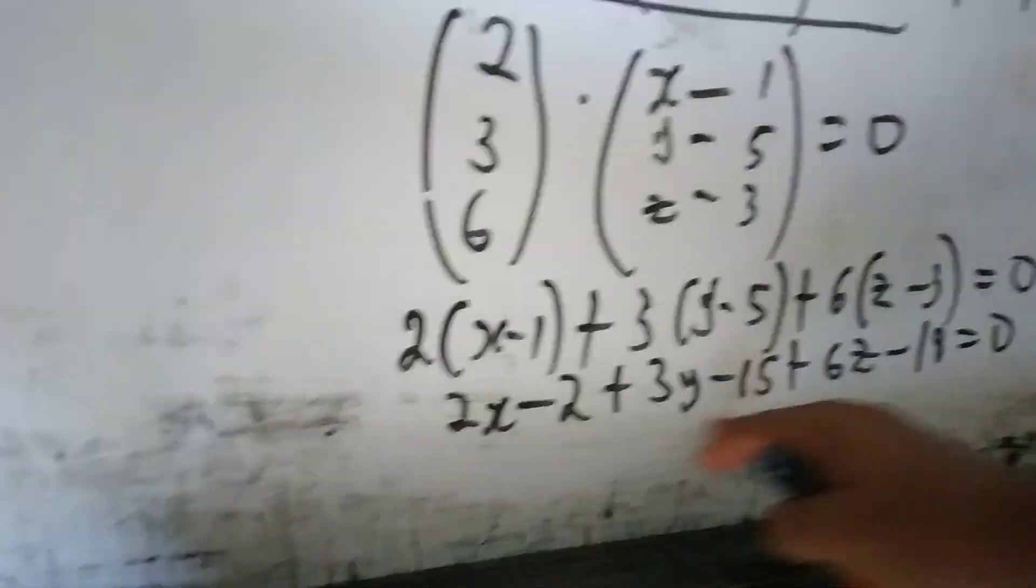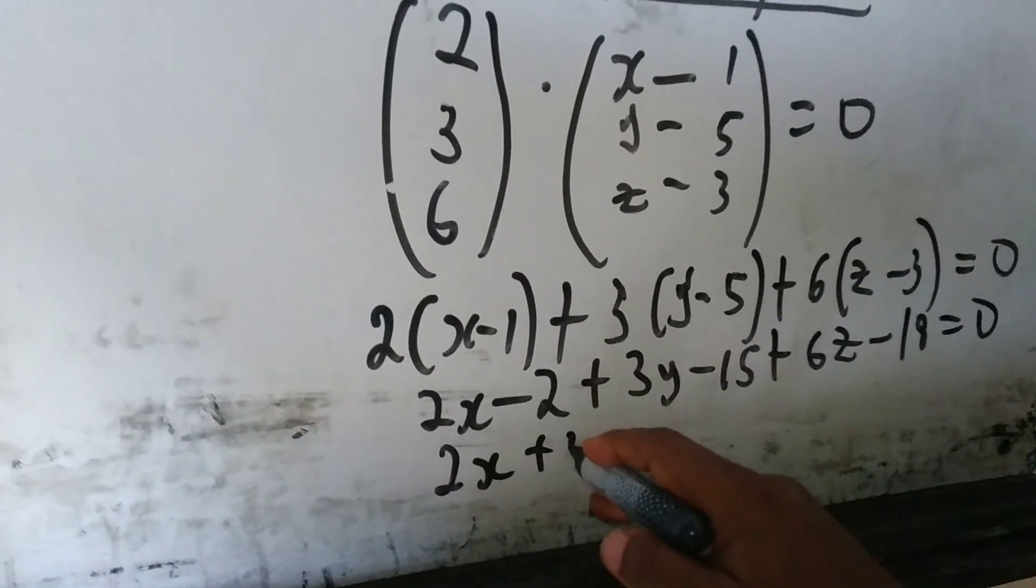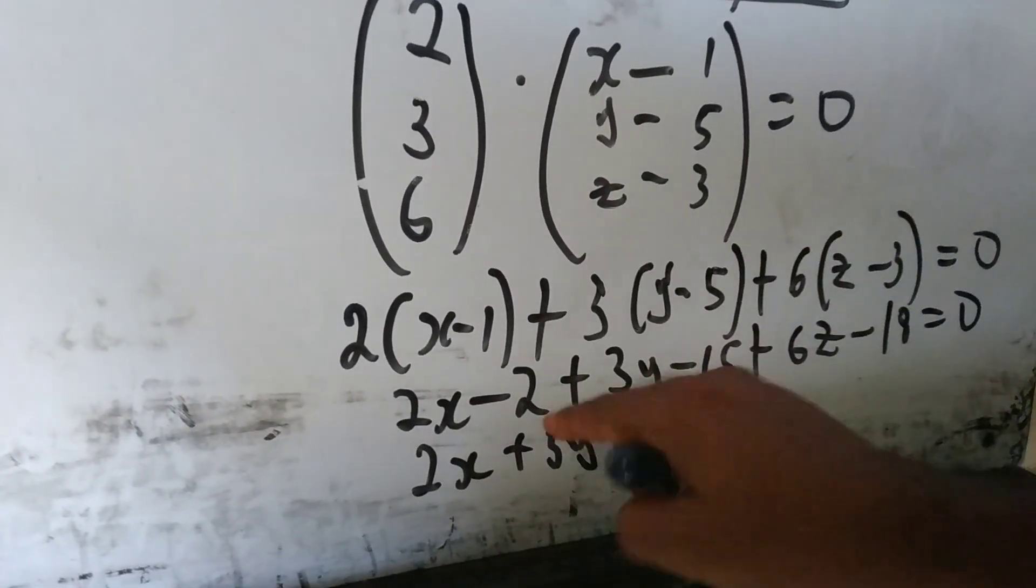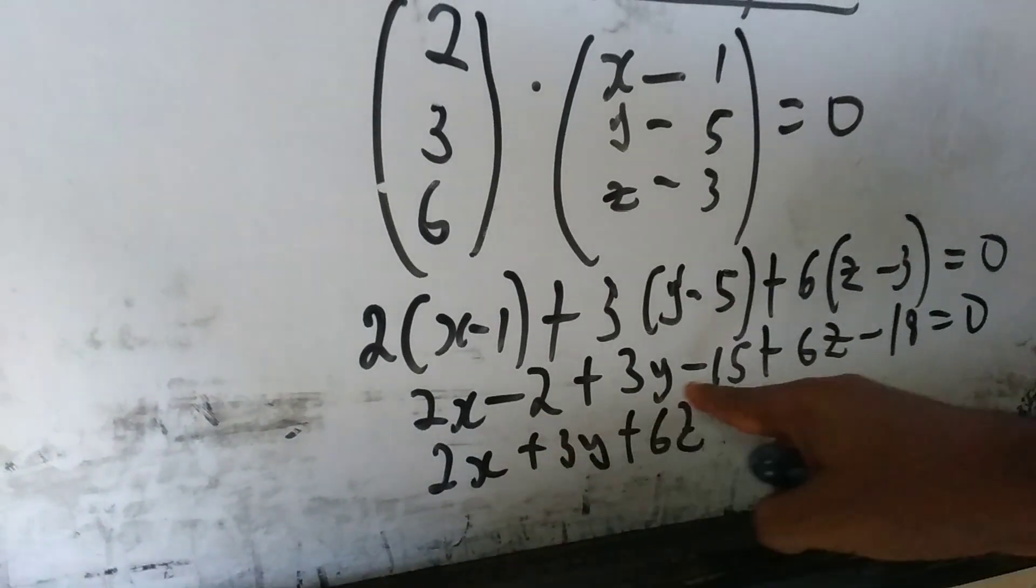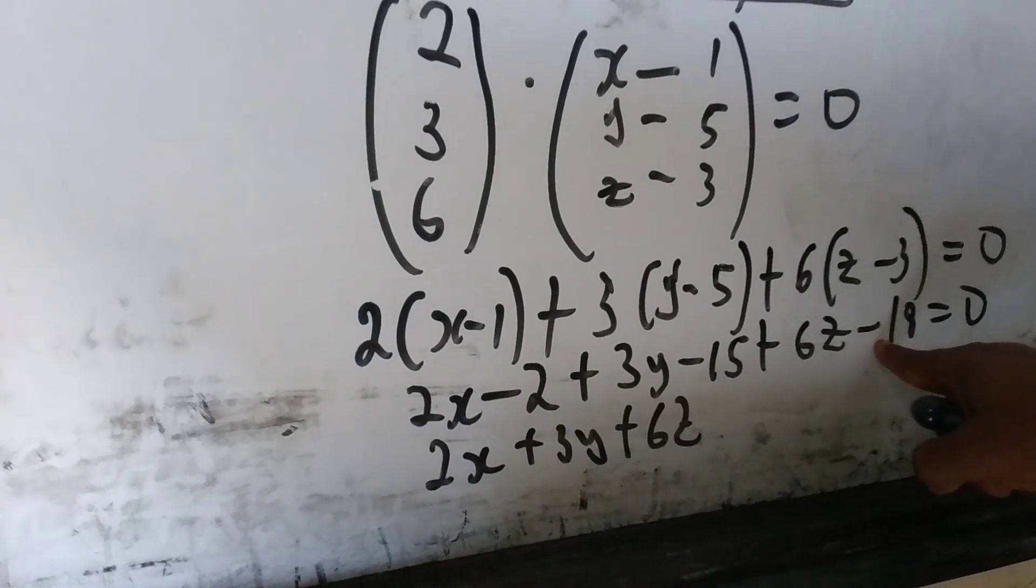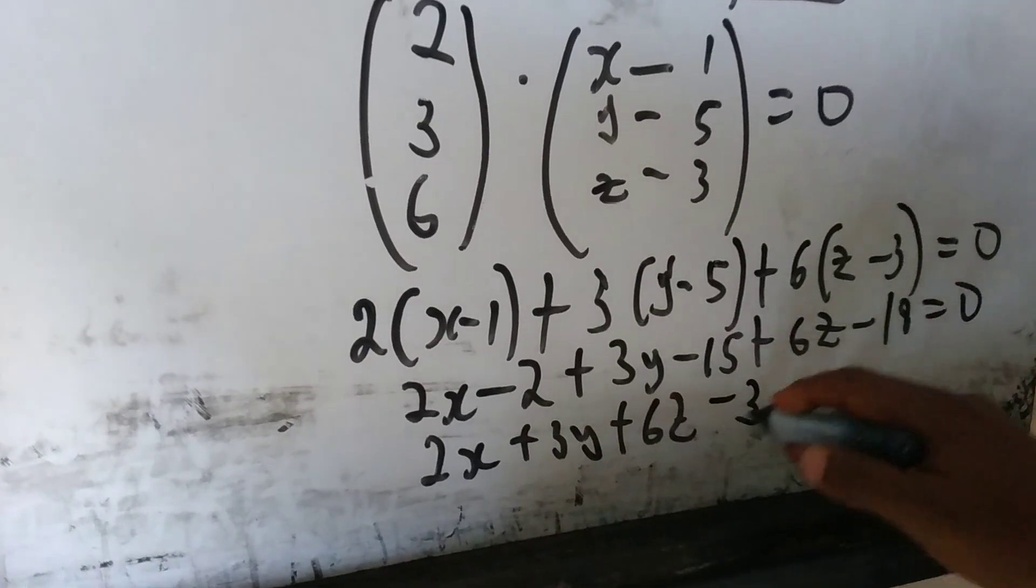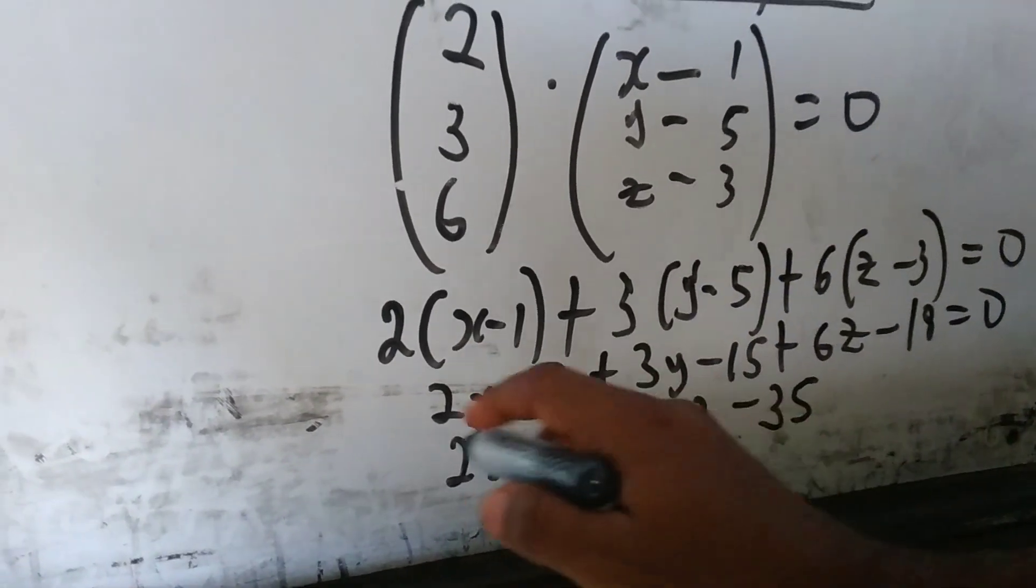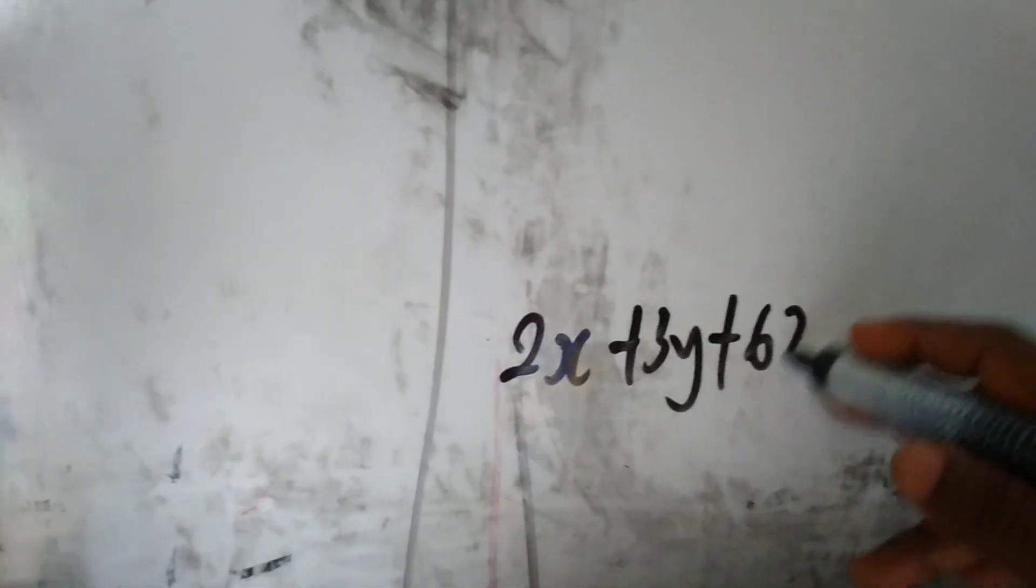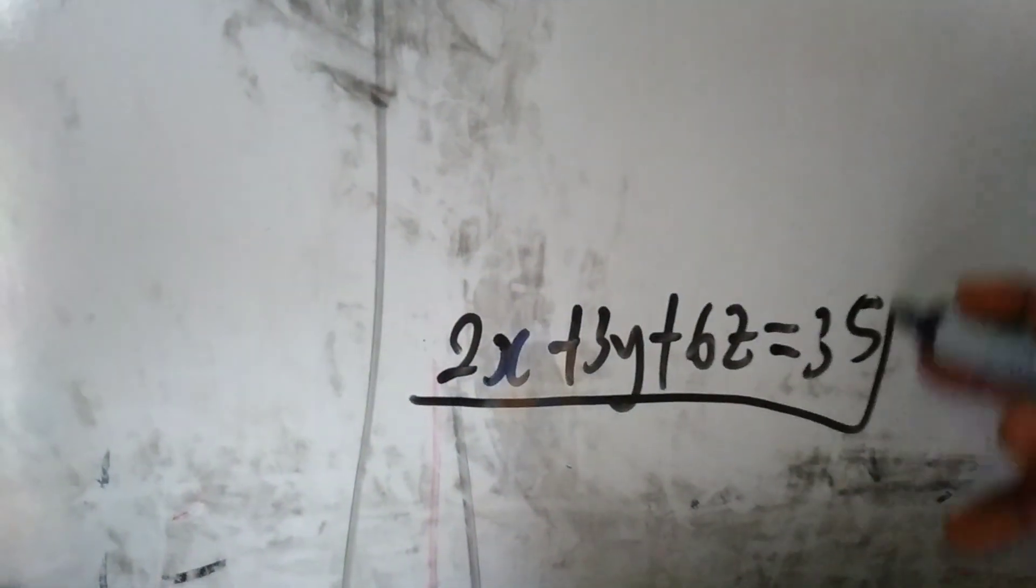Now, I can take the ones that I have in variable on one side. Like writing 2X plus 3Y plus 6Z. Then, I combine minus 2, minus 15, and minus 18. Minus 2 minus 18 gives us minus 20. Minus 20 minus 15 gives us minus 35.